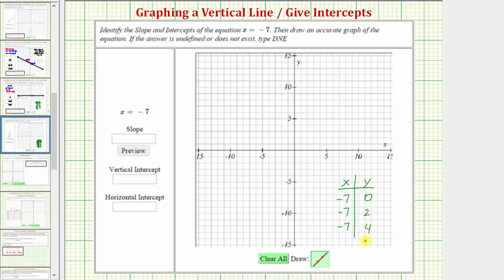Now let's plot these three points and graph the line. The point negative seven comma zero from the origin would just be left seven units here. Negative seven comma two from the origin would be left seven up two, and negative seven comma four from the origin would be left seven up four.